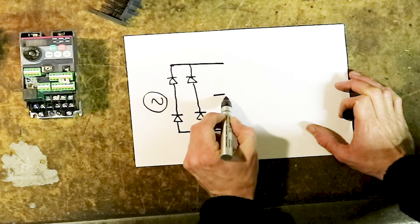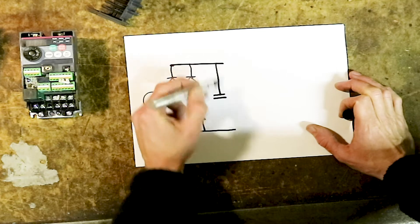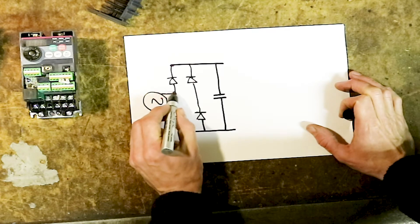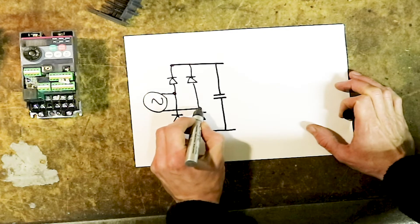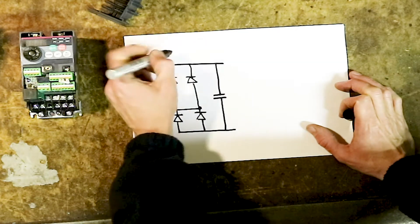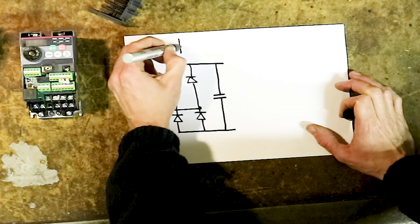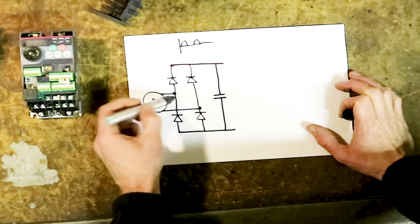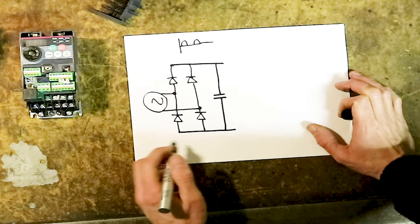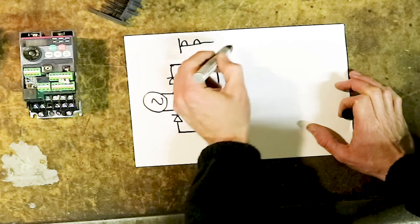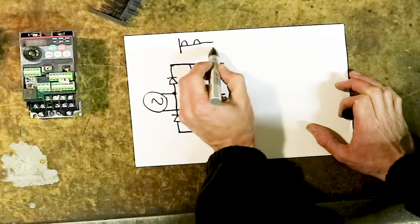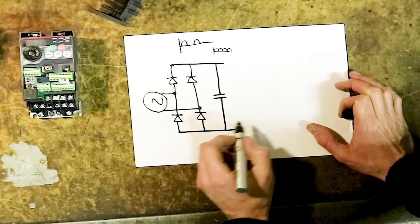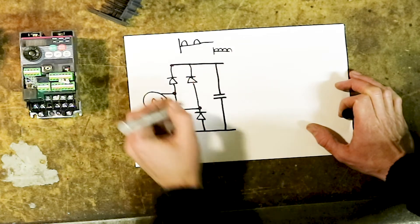You're going to have a smoothing capacitor that smooths out the waveform and gives us DC. The AC goes through the diode one way and cuts the bottom off the waveform - it only goes through on one side, and on the alternating side it does the same at the bottom. The smoothing capacitor charges up and gives you DC. So this is the input side.